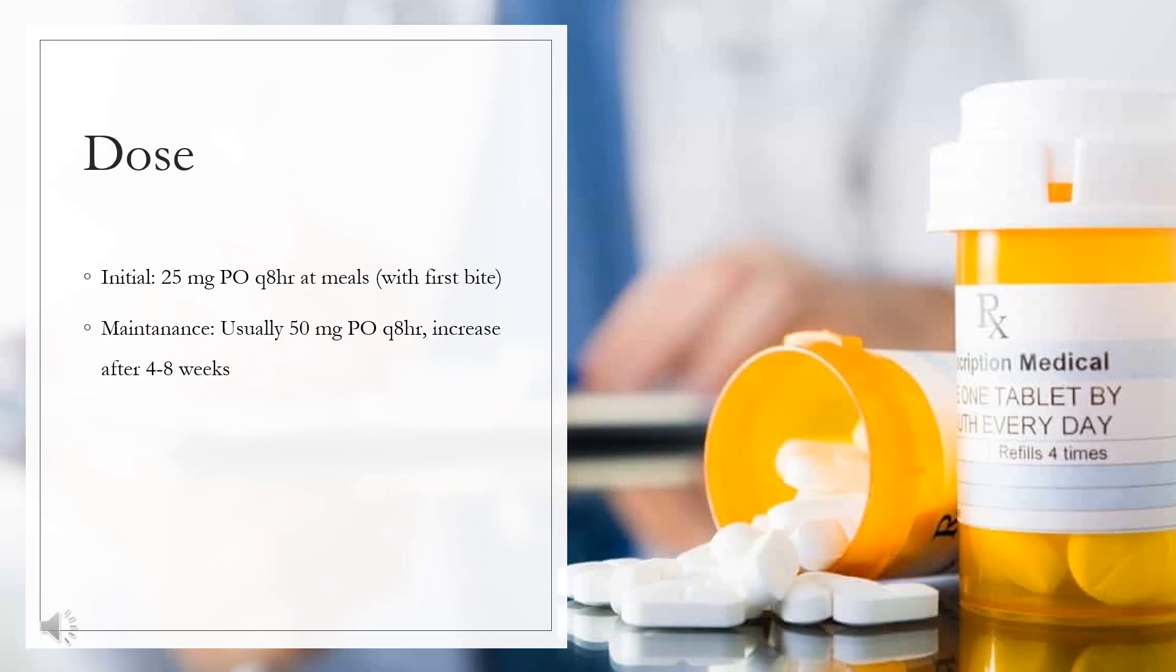Type 2 diabetes mellitus dosing: Initial 25 mg orally three times daily at meals, with first bite. Maintenance usually 50 mg orally three times daily; increase after 4-8 weeks. Not more than 100 mg orally three times daily.